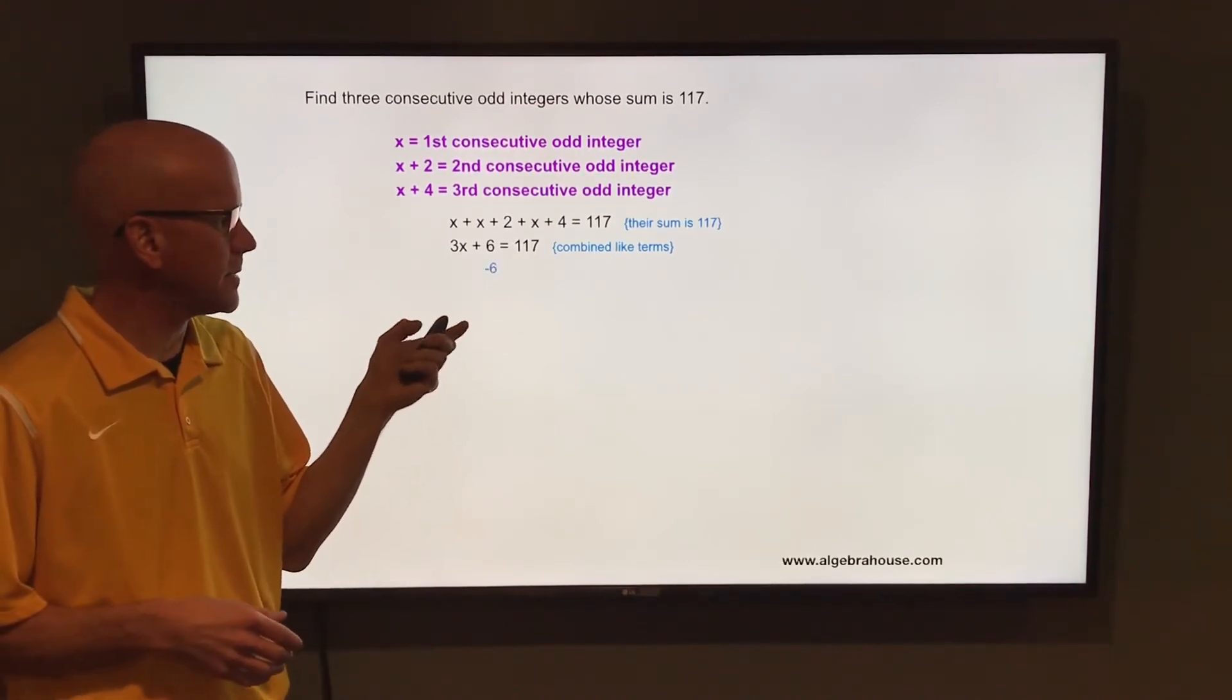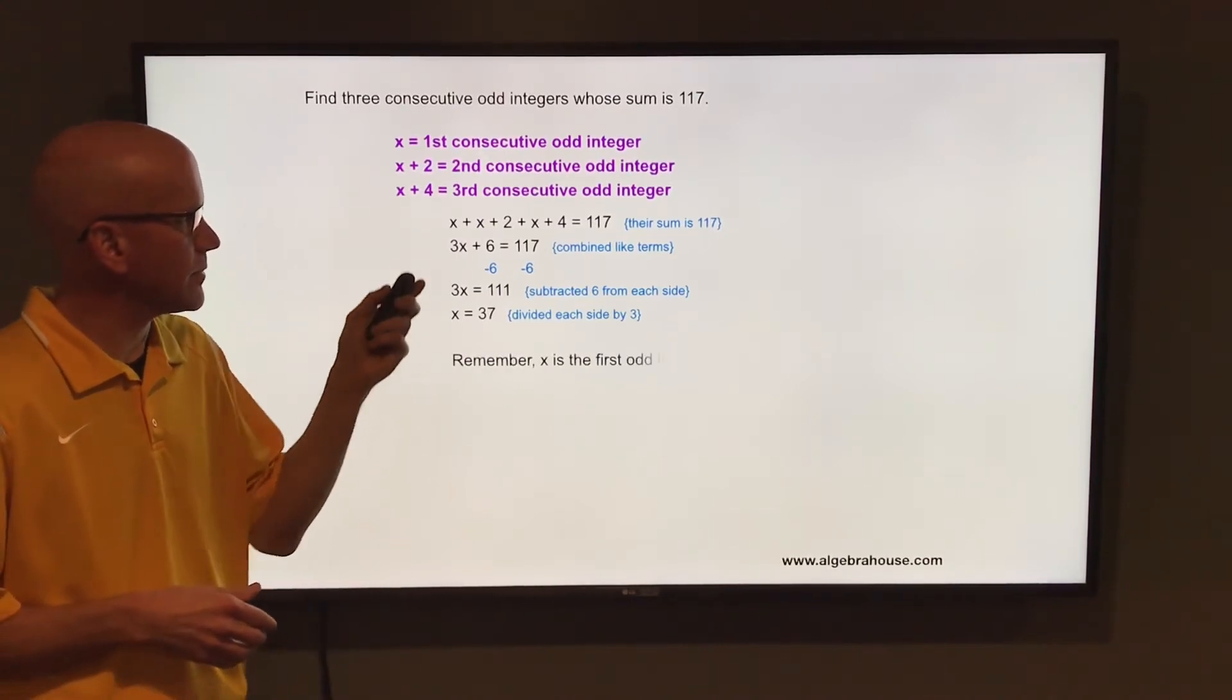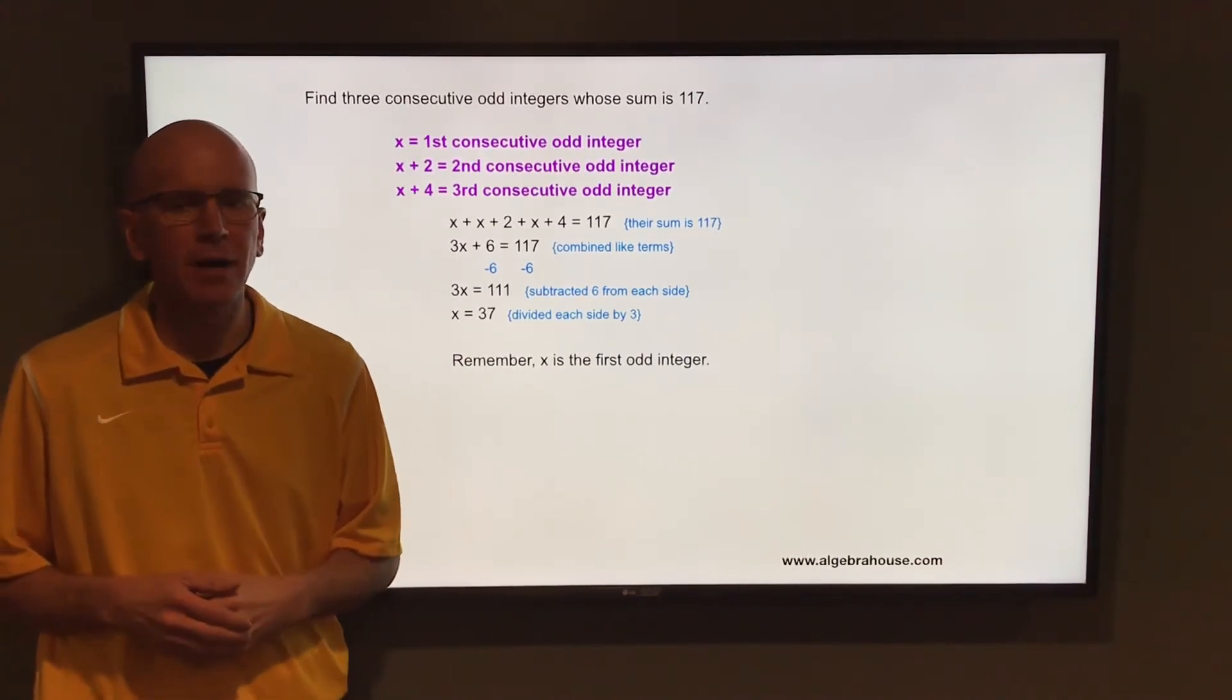Subtract 6 from each side, get 3x equals 111. Then divide each side by 3, x equals 37. So that is the first consecutive odd integer.